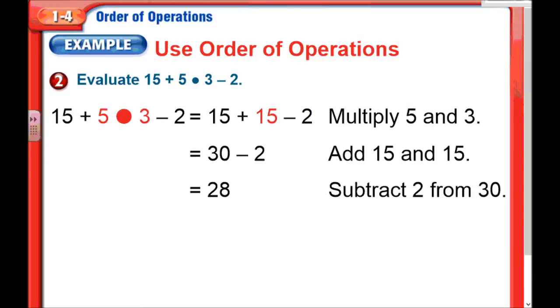Another example, 15 plus 5 times 3, that's what that big dot is here, minus 2. So step one, they walk us through it. We're going to multiply the 5 and the 3. There's 5 times 3 is 15. Next step is to add the two 15s. 15 plus 15 is of course 30. Now we're finally going to subtract 2 from the 30, and 30 minus 2 is 28.